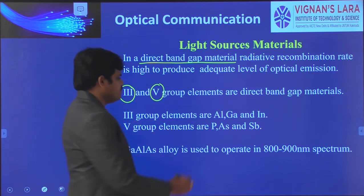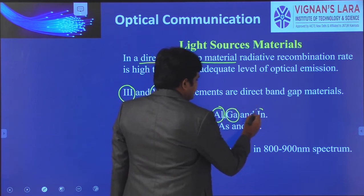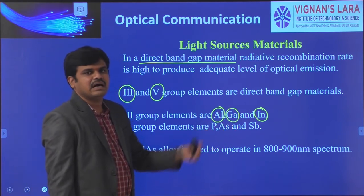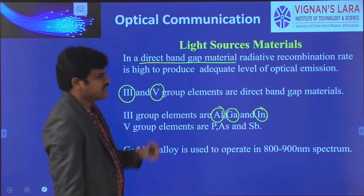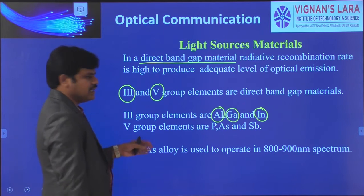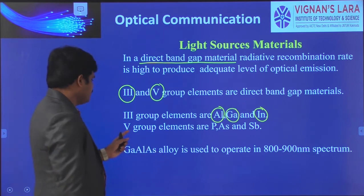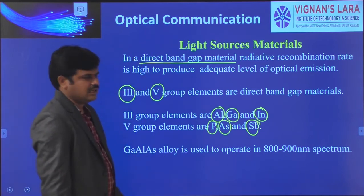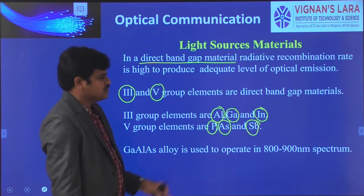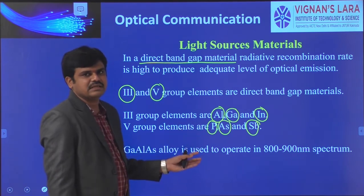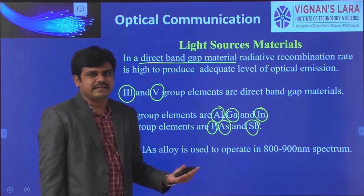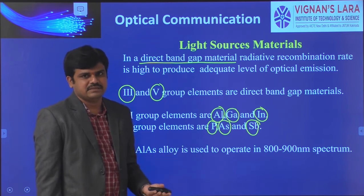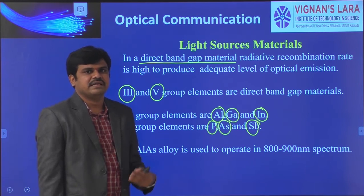If you see the third group elements, those are aluminium, gallium, and indium. These three elements are preferred from the third group as direct band gap semiconductor materials, as an alloy. From the fifth group, phosphorus, arsenic, and antimony are generally preferred as an alloy. When you add these kinds of materials to the semiconductor, the radiative recombination rate generally increases, which increases quantum efficiency, and in turn increases the brightness or radiation.